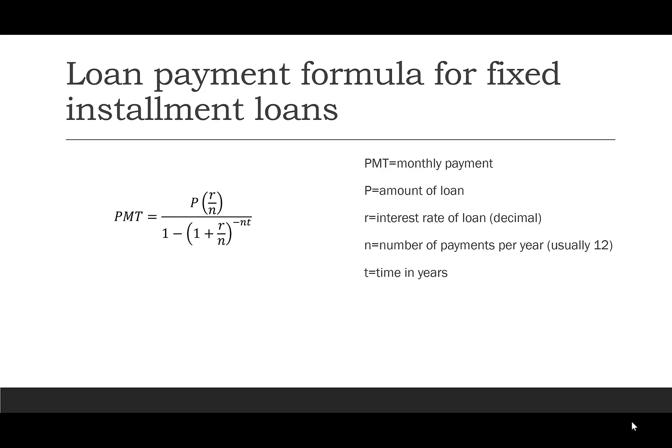PMT stands for the monthly payment. P is the amount of the loan. R is the interest rate written as a decimal. N is the number of payments per year, which is usually 12. And T is the time in years.